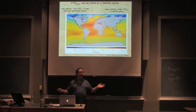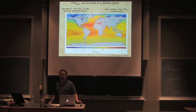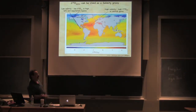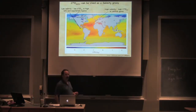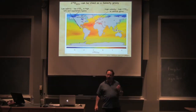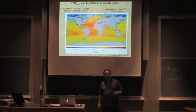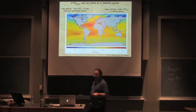Where else might you find low δ¹⁸O values? You can sort of see it on this picture in the yellowish colors — it's the Amazon runoff. So any place you're going to have the ocean affected by river runoff, you're going to have depleted δ¹⁸O values offshore from that region.